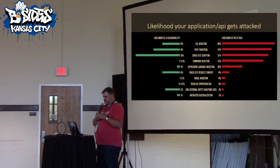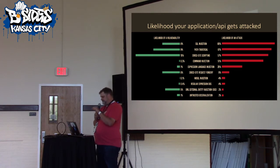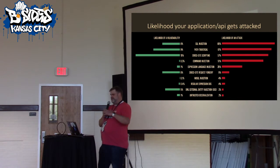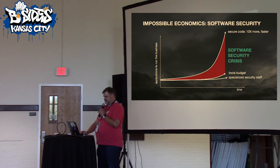For example, the likelihood of your application having a command injection vulnerability is 0.3%. But there's a 51% likelihood you're going to be attacked for command injection even though you're probably not vulnerable. So we have all this weird data and we haven't really known what to do with it.